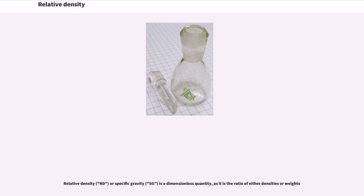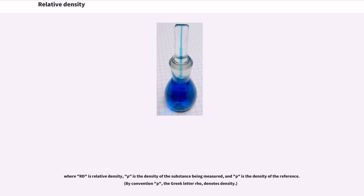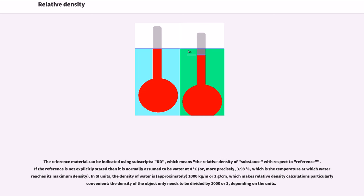Relative density (RD) or specific gravity (SG) is a dimensionless quantity, as it is the ratio of either densities or weights, where RD is relative density, rho is the density of the substance being measured, and rho is the density of the reference. By convention, the Greek letter rho denotes density. If the reference is not explicitly stated, it is normally assumed to be water at 4°C (more precisely 3.98°C), the temperature at which water reaches its maximum density. In SI units, the density of water is approximately 1000 kg/m³ or 1 g/cm³, making relative density calculations particularly convenient.